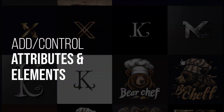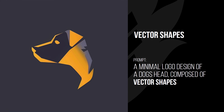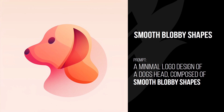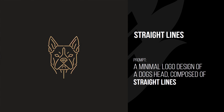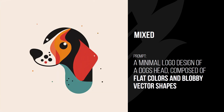You also want to control certain attributes and elements, since there are things you want and don't want inside a logo. For example, use 'flat colors' to steer away from gradients. Add 'vector shapes' for simpler shapes easier to convert to vector, 'geometric shapes' for that geometric look, or 'smooth blobby shapes' for that style. You can also use 'straight lines' to get more of an outline-style logo.